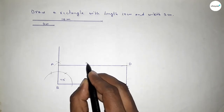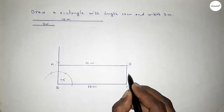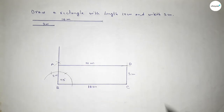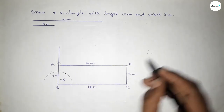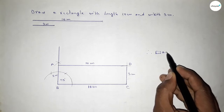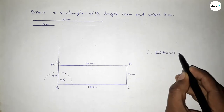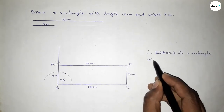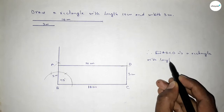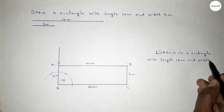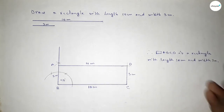So this side is 10 centimeter, this side 10 centimeter, this side 3 centimeter, and this side 3 centimeter. Therefore rectangle ABCD is a rectangle with length 10 centimeter and breadth 3 centimeter. That's all.